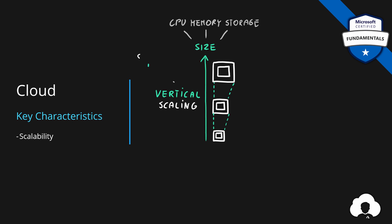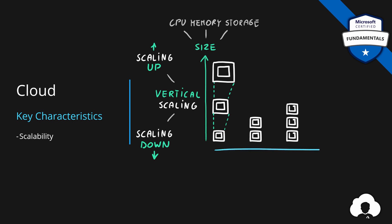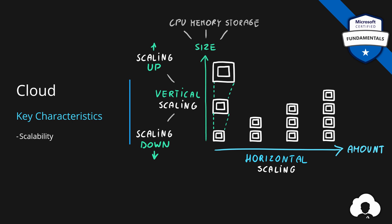Increasing the size of a resource is called scaling up. If you decrease the size and decrease the power of the machine, this is called scaling down. But besides changing the size of your resource, you can also scale by adding more resources to your environment — so increasing the amount of resources themselves. Since we are moving along the horizontal line, this is called horizontal scaling. If you increase the amount of resources, this is called scaling out. If you decrease the amount of resources, this is called scaling in.